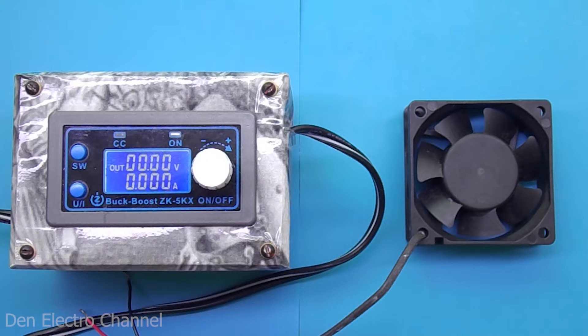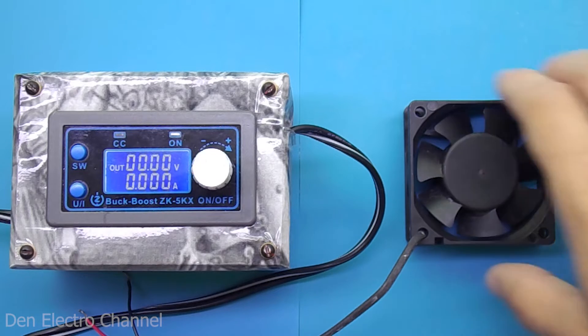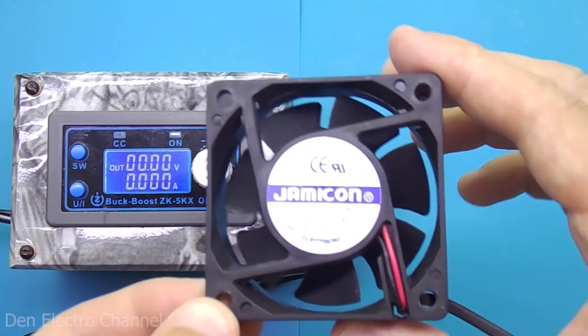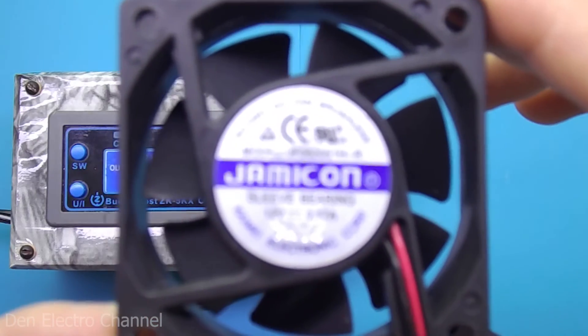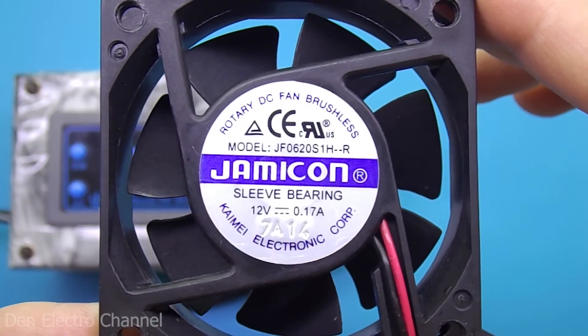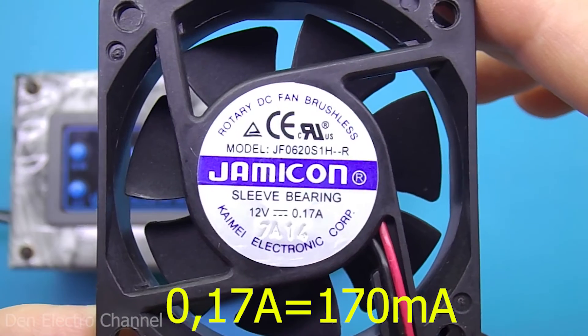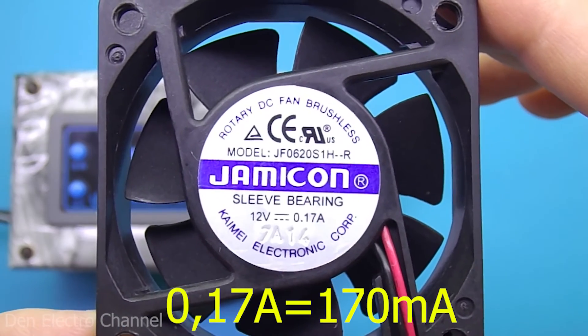To find out what resistance the resistor is, we need to know the operating characteristics of the fan. This is the supply voltage and current consumption. In this case at 12 volts the fan consumes 170 milliamps.